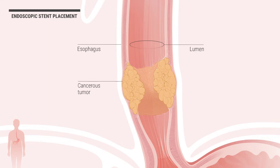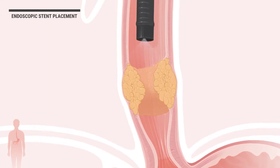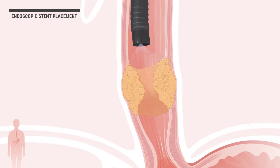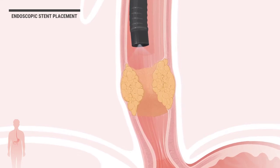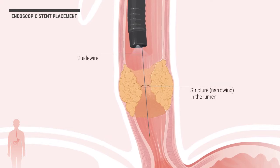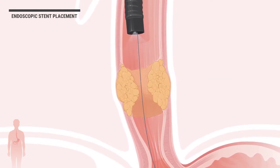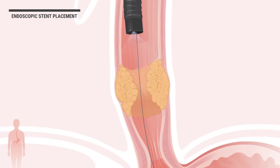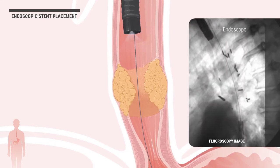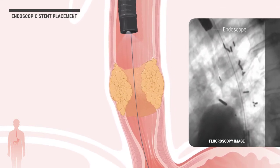An experienced, fellowship-trained interventional endoscopist accesses the esophagus by inserting an endoscope through the mouth and into the esophagus. After the location is observed and confirmed, a guide wire is inserted through the tiny stricture or narrowing in the lumen of the esophagus. The placement of the guide wire is aided by fluoroscopy, an imaging technique similar to heart catheterization.